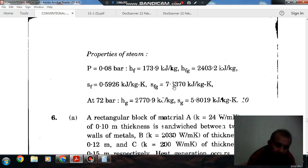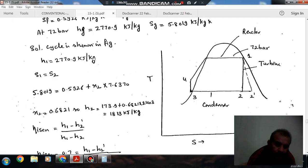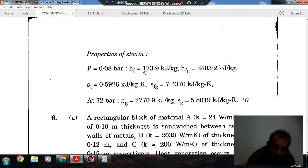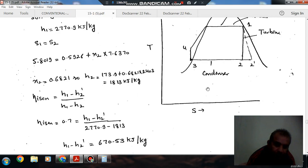Sf is 0.5926 and sfg is 7.6370. From this we can find out x2 dash, and then using the enthalpy, hf and hfg, we can find out the enthalpy at state 2 dash. That is 1813 kilojoules per kilogram.